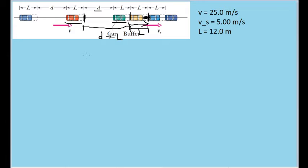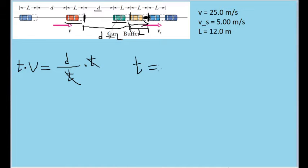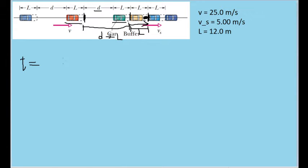So let's find out what that time is. The speed of any motion V is equal to the distance traveled divided by the amount of time it took. Therefore, the time of any motion is equal to the distance traveled divided by the speed. In this particular case, if we're looking for the amount of time it takes for the green car to travel a distance of L — the car's length — that will be equal to L divided by V sub s, since that's the speed of the slow-moving cars within the shockwave.